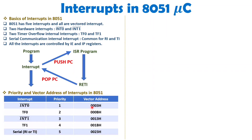All interrupts are defined with predefined vector addresses. Whenever an interrupt occurs, the ISR program resides at that vector address. INT0 jumps to 0003H, TF0 to 000BH, INT1 to 0013H, TF1 to 001BH, and serial communication to 0023H. Program control jumps to these addresses based on which interrupt is triggered.